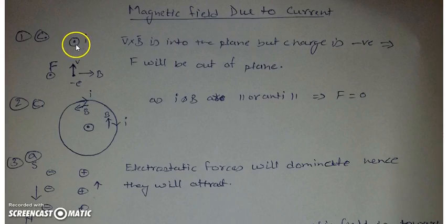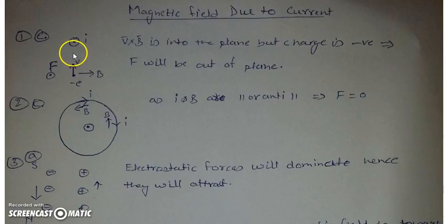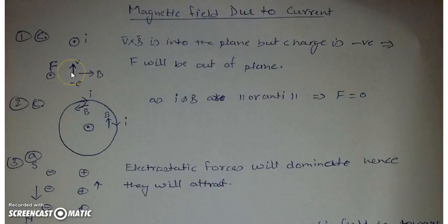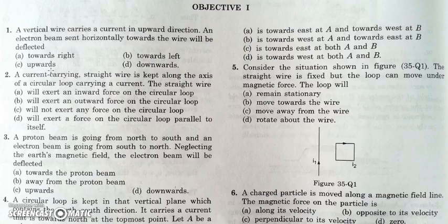Let's say the current is outward, coming out of the plane, and there is an electron moving towards the wire horizontally. Using the right-hand rule, the magnetic field due to this wire points in a certain direction, and V cross B is into the plane. But as the charge is negative, the force will be opposite — so force will be out of the plane. The charges will move out of the plane, or we can say the charges will go in the upward direction.